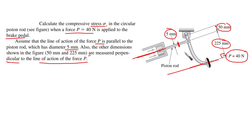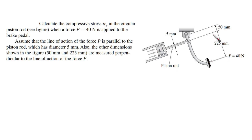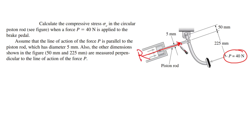First of all, we need to know the key solution of this problem. Whatever system we have, it should be in equilibrium. So what are the forces being applied? We are going to find force P, and for whatever force is applied at the brake pedal there should be a reaction R that is going to be developed in this piston rod to keep the system in equilibrium. The point where we take moments equal to zero is the hinge point.